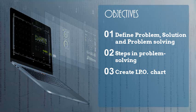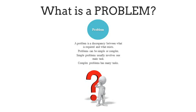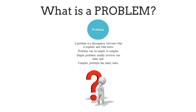We also want to create what is called an IPO chart. Now everyone has problems — we hear everyone saying 'I have a problem' — but what is a problem? Your text defines a problem as a discrepancy between what is required and what exists. A discrepancy means there's a difference between what you have and what you actually need to get done.